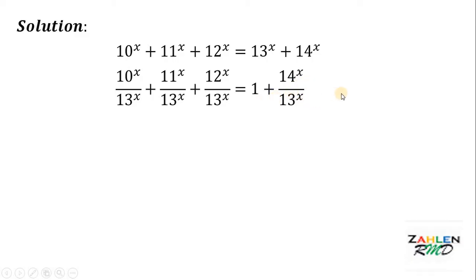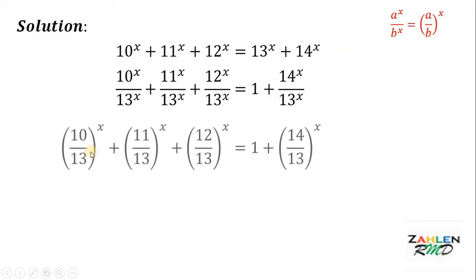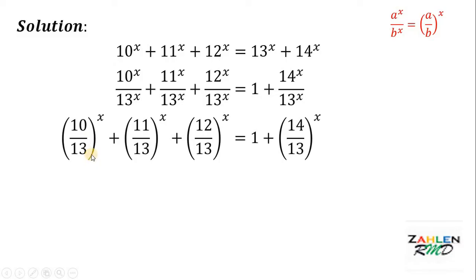Now let's apply the law of exponents. If we have a raised to x all over b raised to x, it is equal to (a over b) raised to x. Therefore, we have (10/13) raised to x plus (11/13) raised to x plus (12/13) raised to x equals 1 plus (14/13) raised to x.